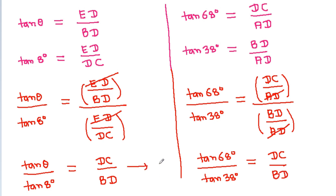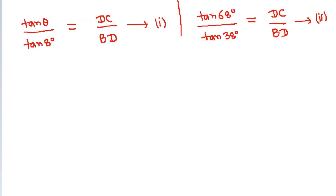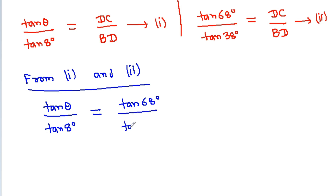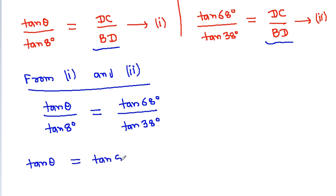Suppose this is equation 1 and this is equation 2. From equation 1 and equation 2, we can say that tan theta by tan 8 degrees is equal to tan 68 degrees by tan 38 degrees, because both are equal to DC by BD. Therefore, tan theta is equal to tan 8 degrees times tan 68 degrees divided by tan 38 degrees.